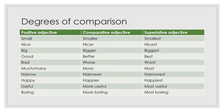Adjectives can be classified into degrees of comparison. You get positive adjectives, comparative adjectives, and superlative adjectives. Examples are small, smaller, and smallest; nice, nicer, and nicest; big, bigger, biggest. Now, these are regular adjectives. You also get irregular ones — for example, useful, more useful, most useful. For those, we add more and most in front of the original word.